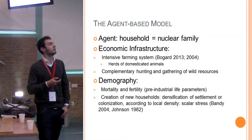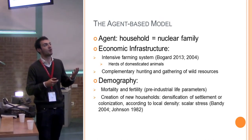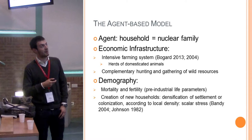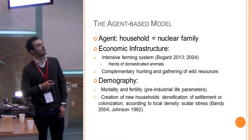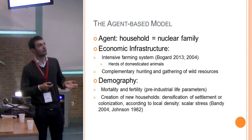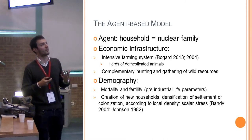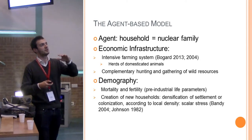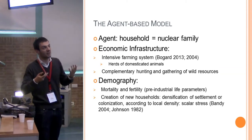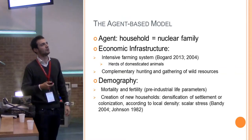Another sub-model concerns demography — essentially, there is mortality and fertility according to pre-industrial life parameters, meaning that individuals within households can die or reproduce. They can also marry, and marriage in this case corresponds to the creation of a new household — a new nuclear family. The new household can correspond to a densification of the already occupied settlement, or to a new colonization, depending on the local density. The local density is an expression of scalar stress — the reduction of resources due to population growth. After a certain threshold, it will not be likely that a new household will be accepted in the settlement, because a large population will cause tension and scalar stress. So the new household will be more likely to leave and colonize a new area.